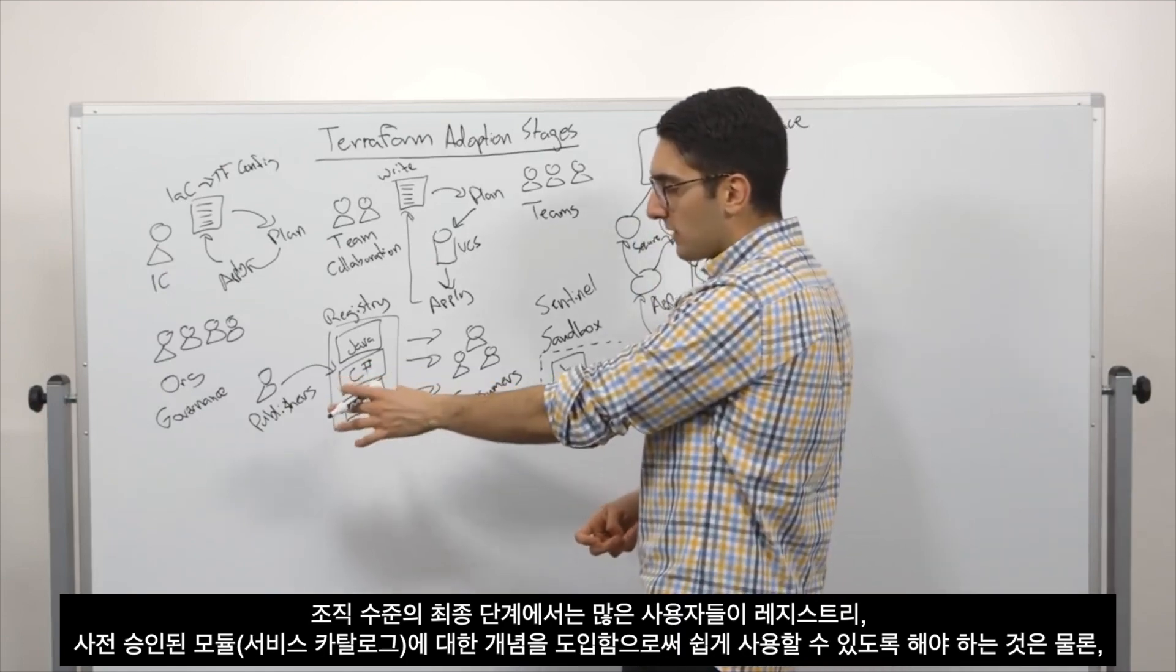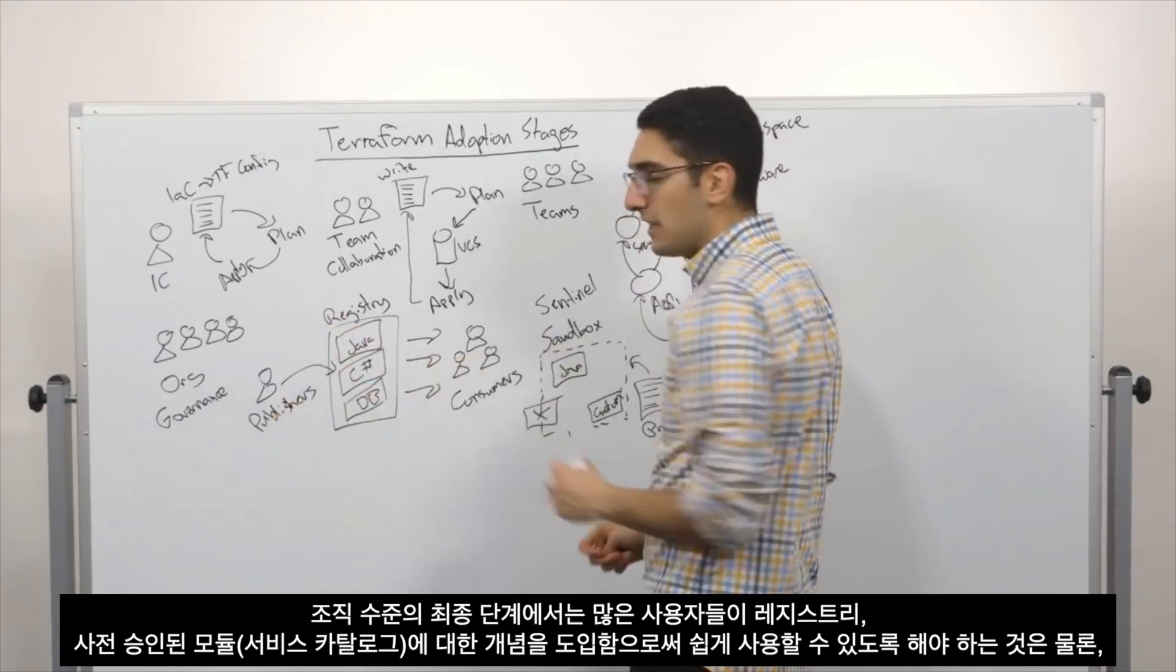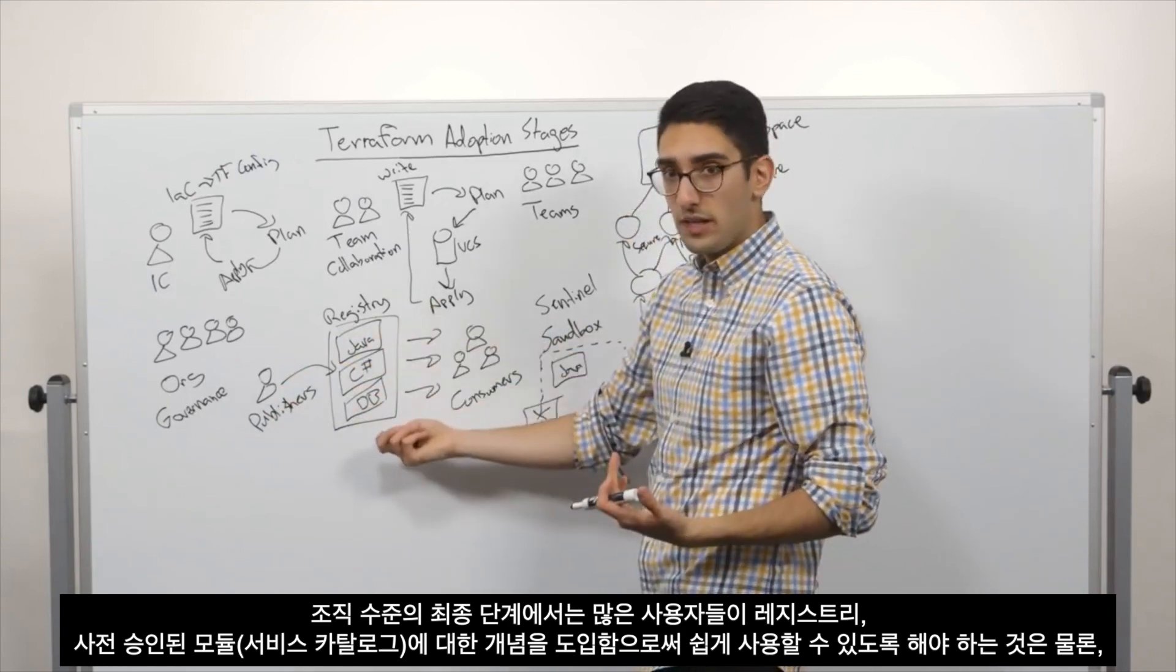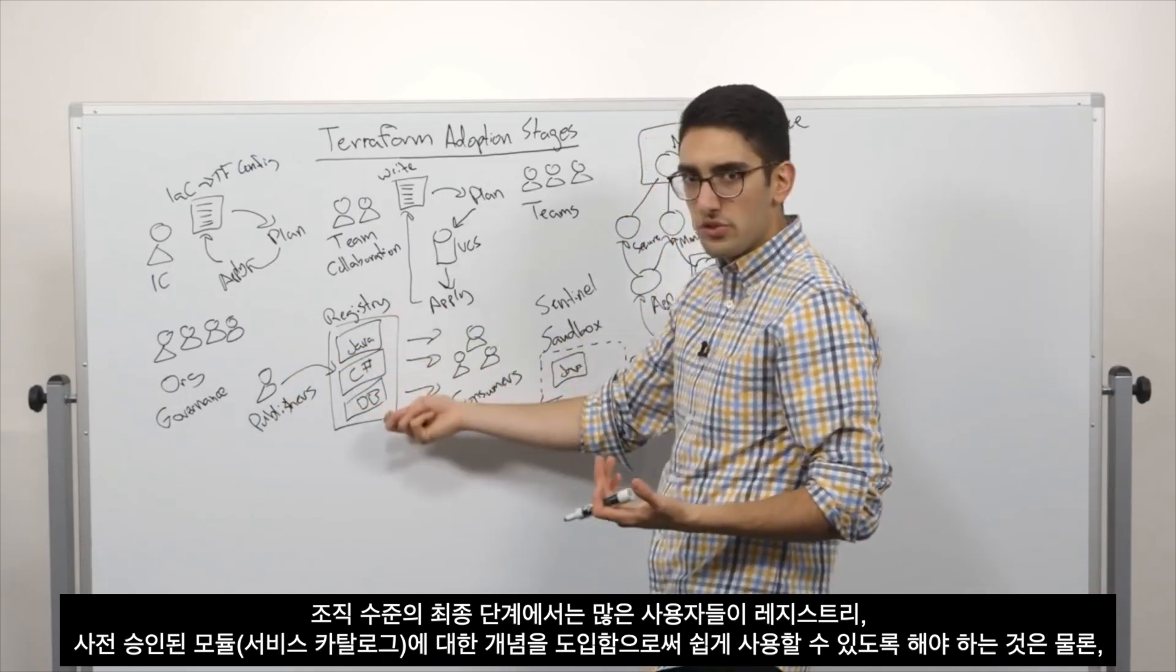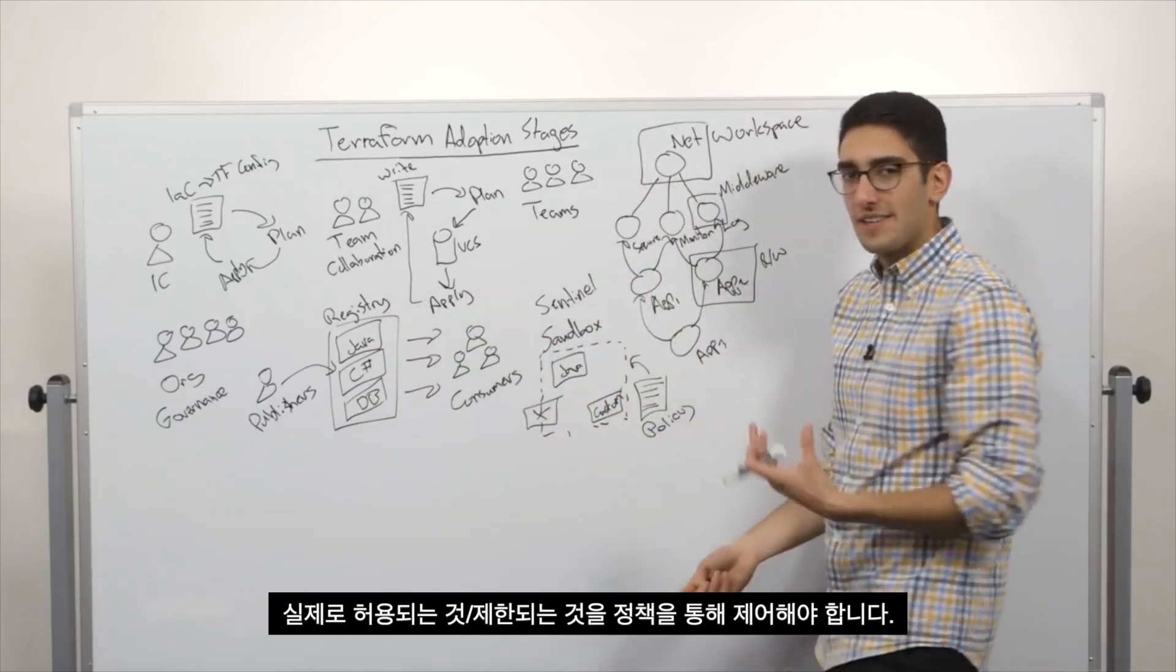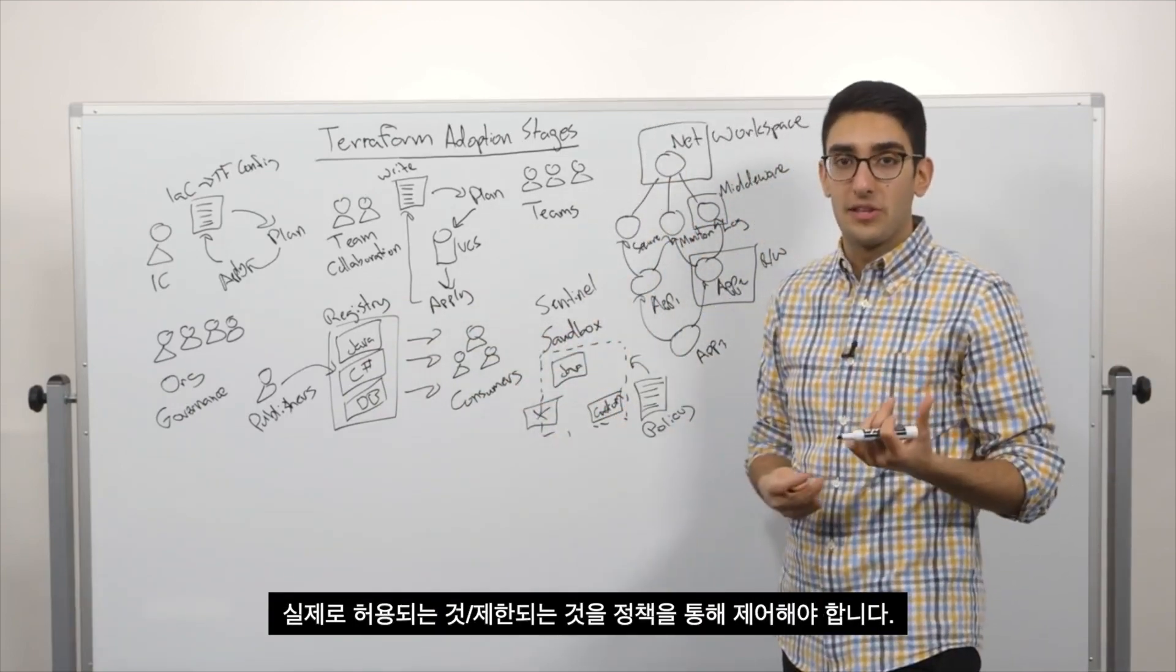And then the final piece at an org level is making it easy for many different consumers by introducing a notion of a registry of pre-approved modules, sort of a service catalog, as well as governing what's actually acceptable and restricting it through policy.